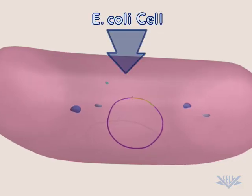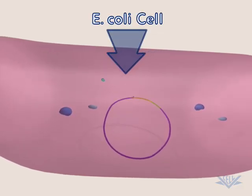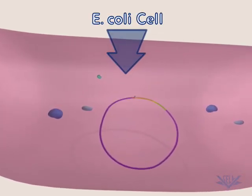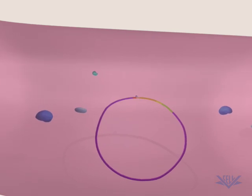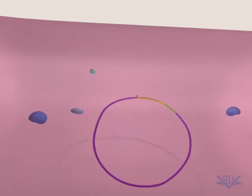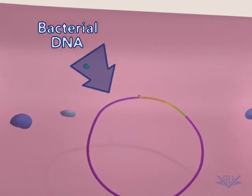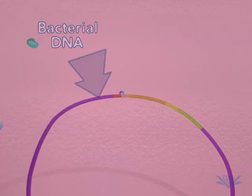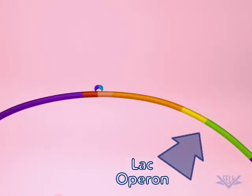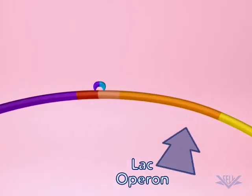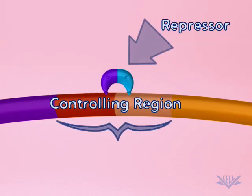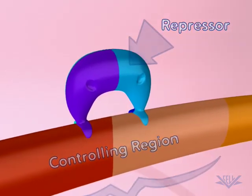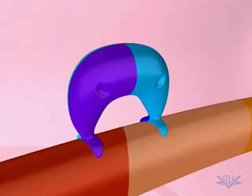Gene expression can be induced or turned on when a specific inducer molecule appears in a cell. For inducible systems, a repressor molecule prevents gene expression by binding to the upstream controlling region.